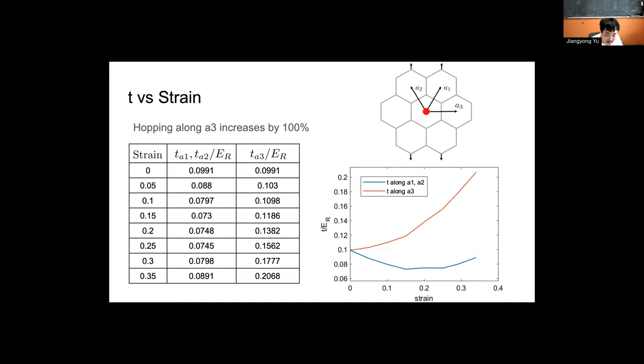as we start increasing strain, what we see is that the hopping along the directions that we're straining is decreasing slightly and then sort of saturating or increasing slightly.